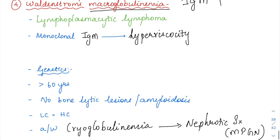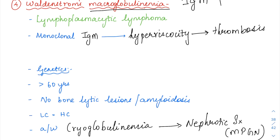IgM causes hyperviscosity, and whenever hyperviscosity is present, stasis occurs, leading to lots of thrombosis. So thrombotic complications can be seen in Waldenstrom's macroglobulinemia.